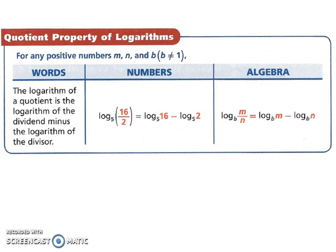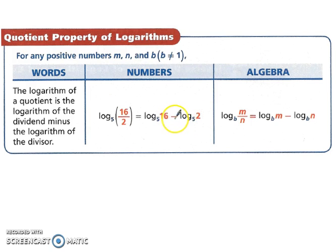Let's look at the quotient property of logarithms. The logarithm of a quotient is the logarithm of the dividend minus the logarithm of the divisor. For example, log base 5 of 16 divided by 2 is the same as log base 5 of 16 minus log base 5 of 2. Just like we added when multiplying, when we divide we use subtraction.